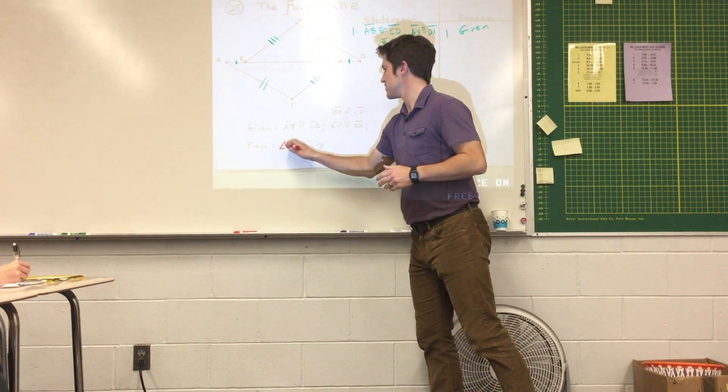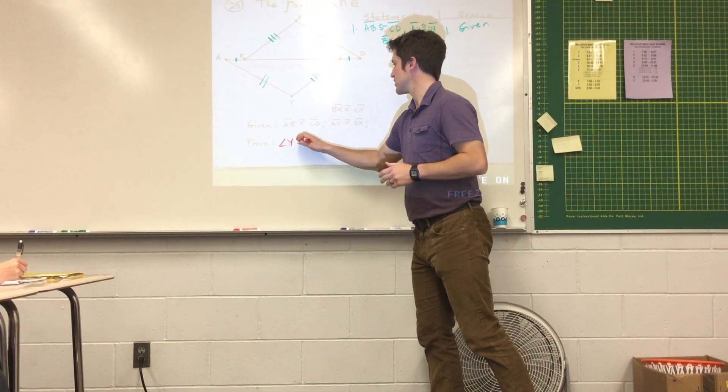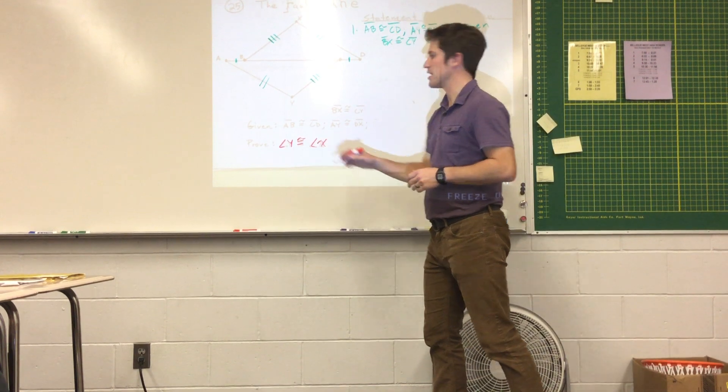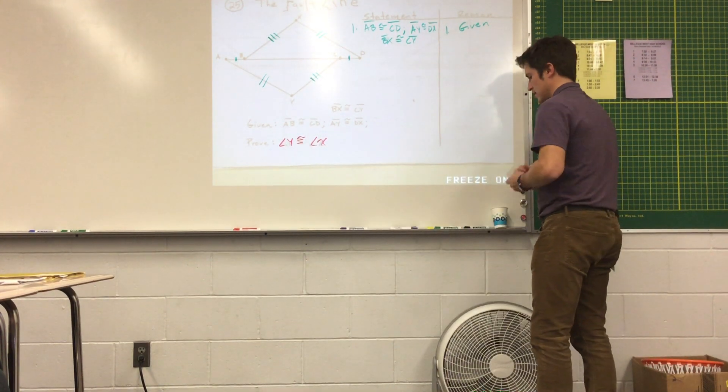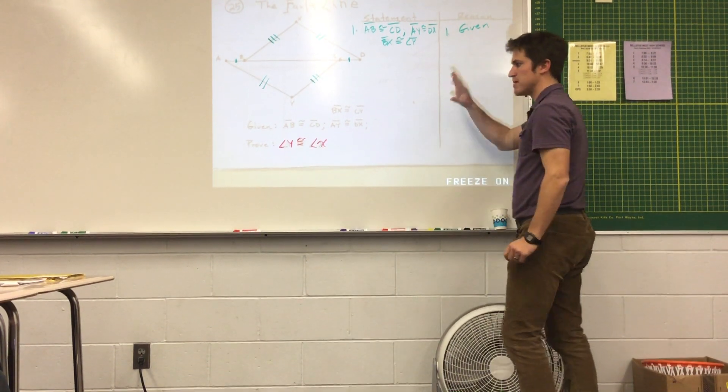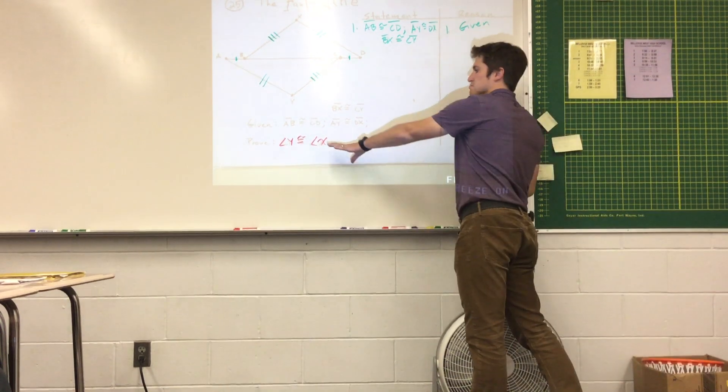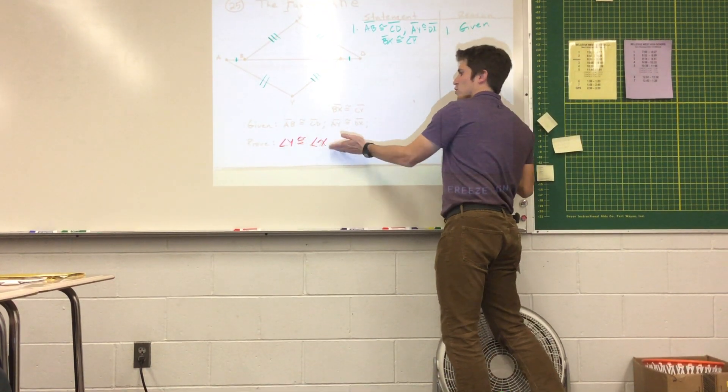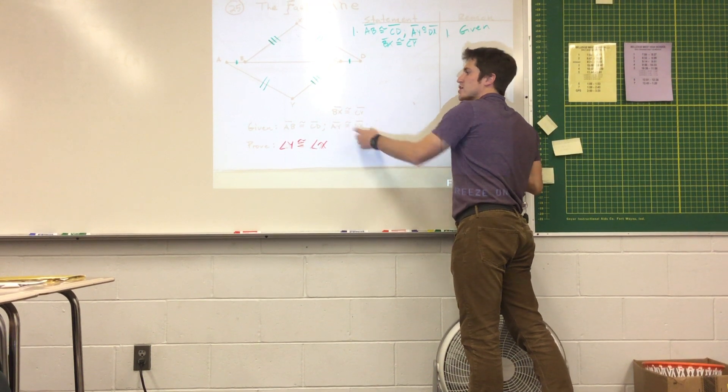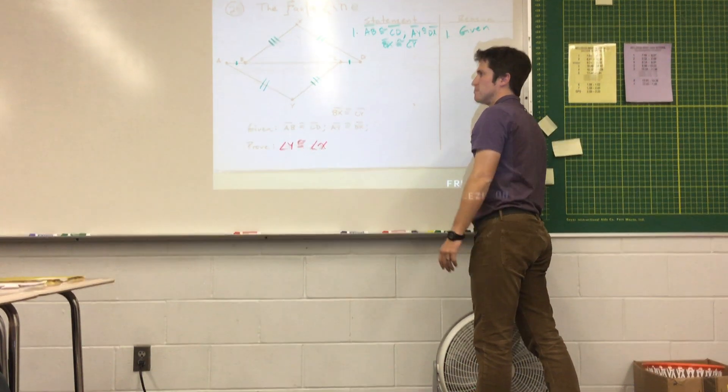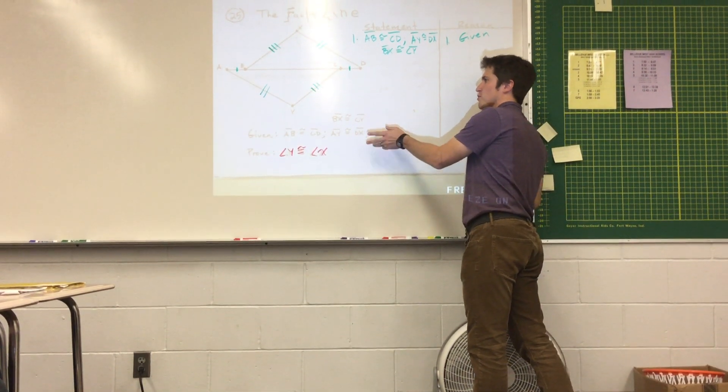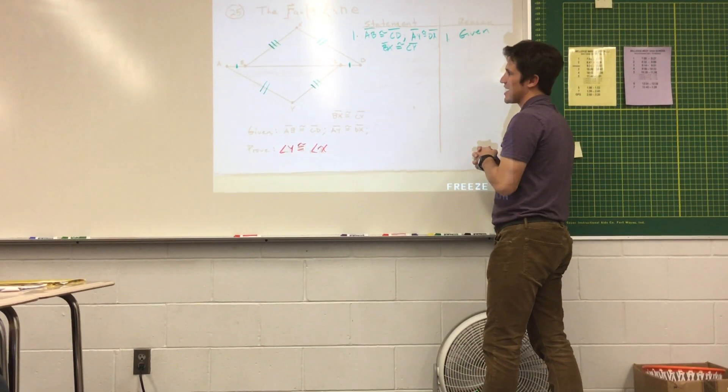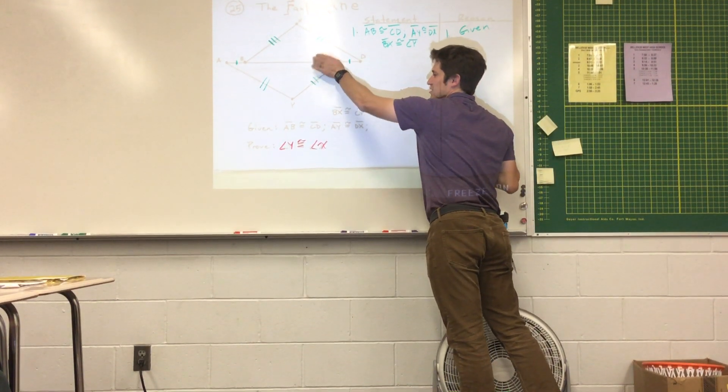My goal is to eventually prove that angle Y is congruent to angle X. Now, maybe to think backwards. Before we prove that these two angles are congruent, what are we going to have to prove? The triangles are congruent. Before we prove the triangles are congruent, we're going to have to show that these two triangles are congruent by side, side, side.